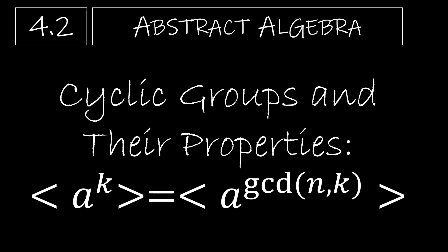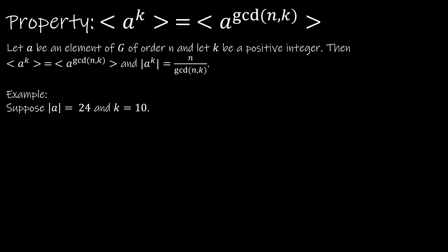This is the second video for the first section of chapter four. I've split the first section of chapter four into two parts. This one deals with the property that the subgroup generated by A to the K is equal to the subgroup generated by the greatest common divisor of N and K. So let's take a look at the property.